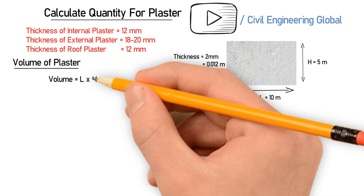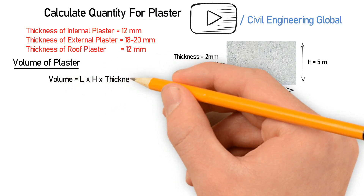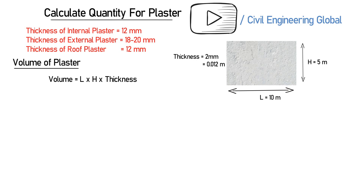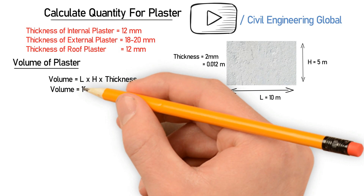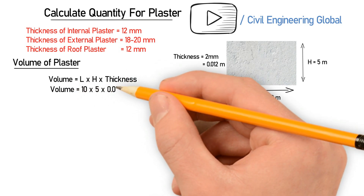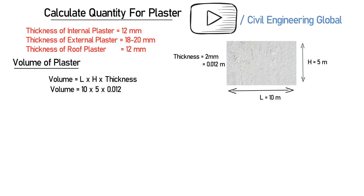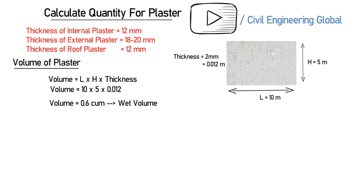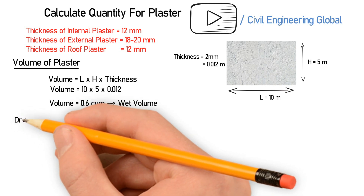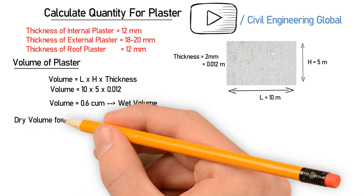Length is 10 meters, height is 5 meters, and thickness is 0.012 meter. After calculating, this gives you a volume of 0.6 cubic meter. Note that this is the wet volume of the plaster. Let's convert this into dry volume.